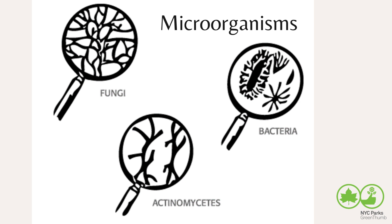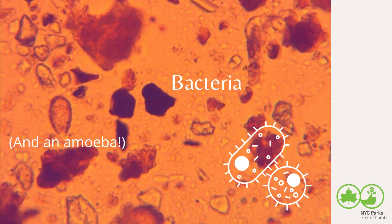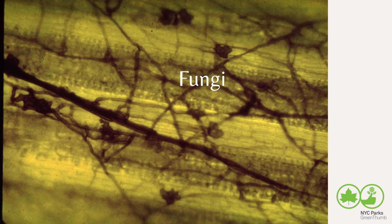Actinomycetes are a large group of bacteria that grow as hyphae-like fungi. They are responsible for the characteristically earthy smell of freshly turned healthy soil. Actinomycetes decompose a wide array of substrates, but are especially important in degrading hard-to-decompose compounds such as cellulose. Annual plants like vegetables and flowers prefer a bacteria-rich soil. Bacteria are visible under a microscope — they're the tiny bubbles you can see in between particles. And fungi eat the browns in compost and soil; here's a photo of fungi where you can see the mycelial network.